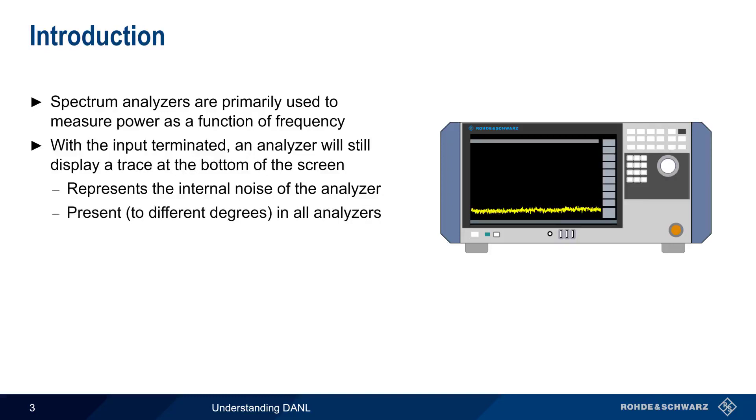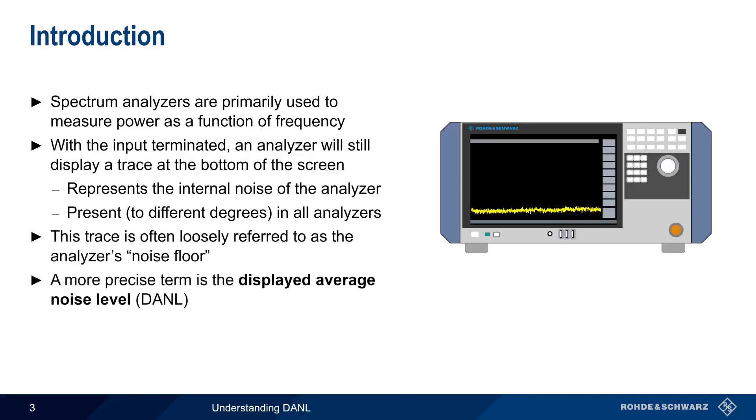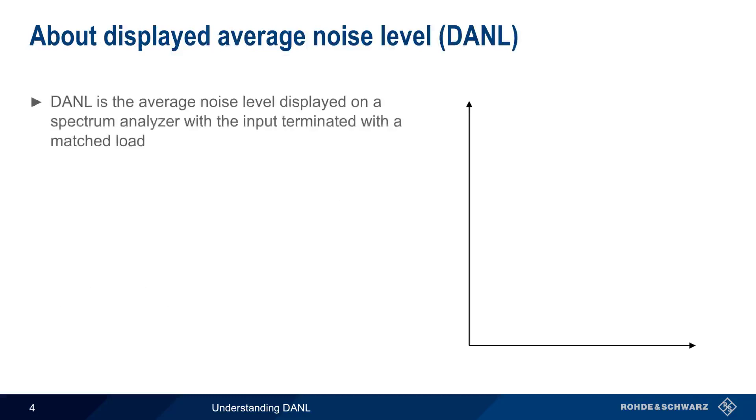This trace along the bottom of our spectrum analyzer screen is sometimes loosely referred to as the noise floor. But the more precise term is the Displayed Average Noise Level, or DANL. DANL is defined as the average noise level that is displayed on a spectrum analyzer when the analyzer input is terminated with a matched load. Since noise power is a function of bandwidth, DANL is normalized to a 1 Hz bandwidth.